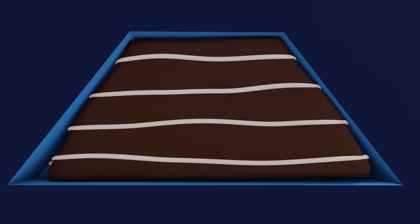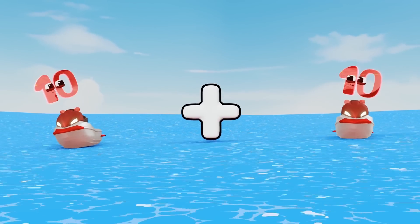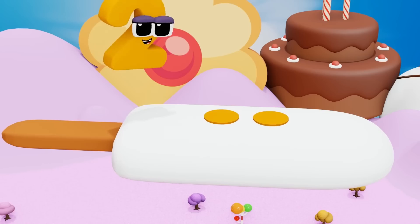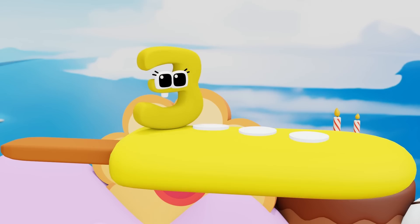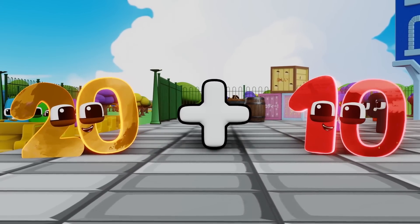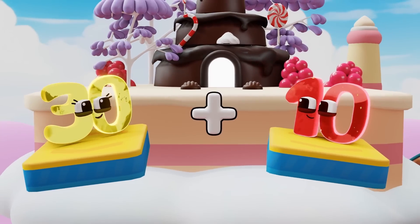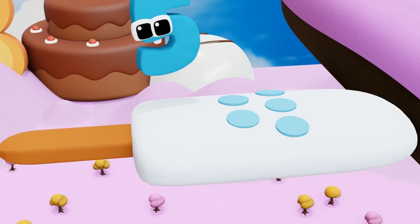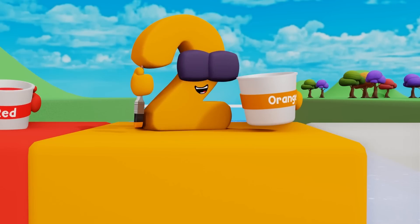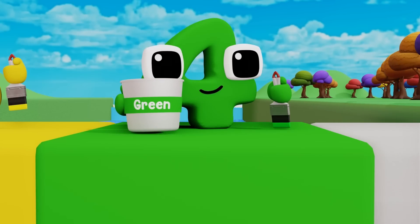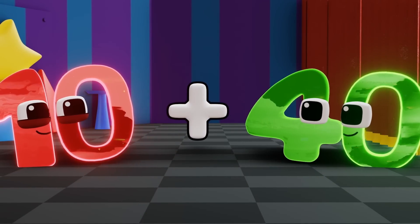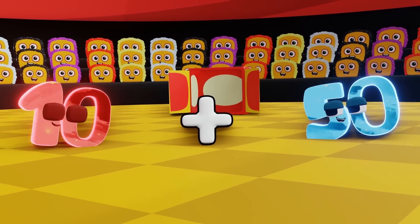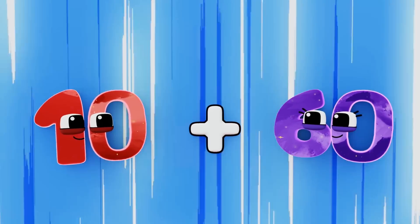Trapezoid, oval, triangle. Ten plus ten equals twenty. Red, orange, yellow. Twenty plus ten equals thirty. Thirty plus ten equals forty. Green, blue, red, orange, yellow, green, blue. Ten plus forty equals fifty. Ten plus fifty equals sixty.